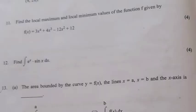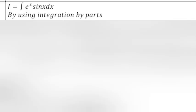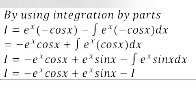Question 12: Find the integral of eˣ·sin(x) dx. Answer: Let I = ∫eˣ sin(x) dx. Using integration by parts, I = eˣ(-cos x) - ∫eˣ cos(x) dx = -eˣ cos(x) + ∫eˣ cos(x) dx.